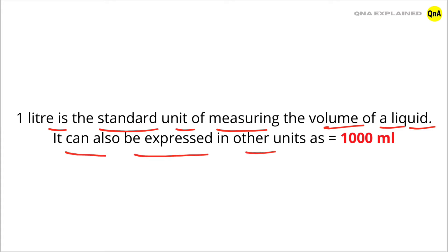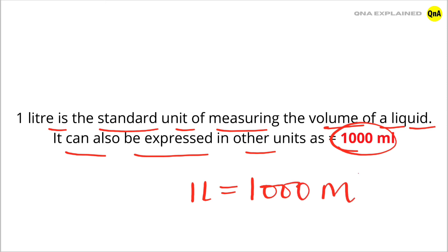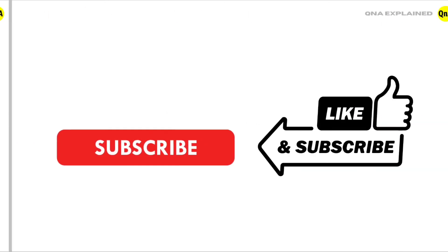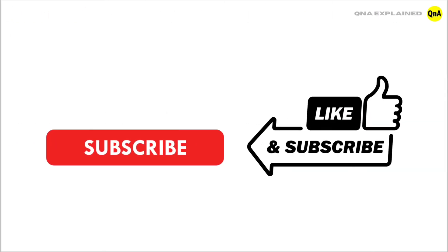One thousand ml. So we conclude that one liter is equal to one thousand ml, which means one thousand milliliter. If you like this video, please like and share, and don't forget to subscribe to my channel.